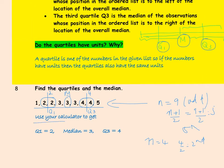We can use the calculator to figure this out quickly. In fact, you should be using the calculator for these calculations because the data sets you are going to see will be much larger. So Q1, the median, and Q3 together split the data set into four equal parts.